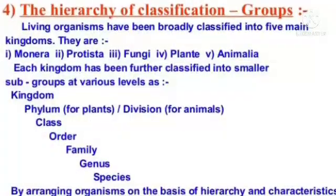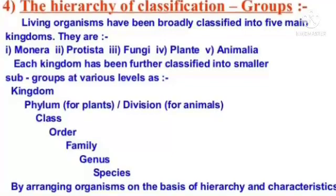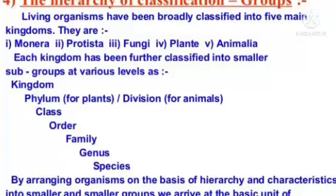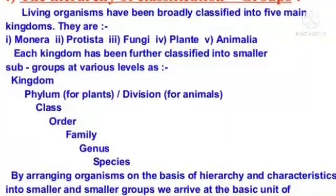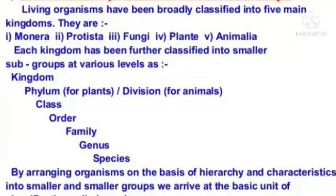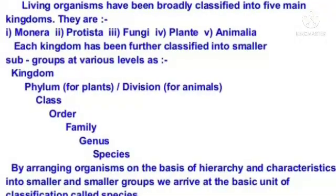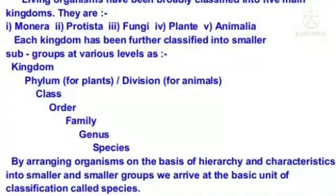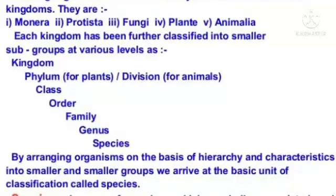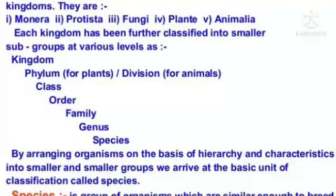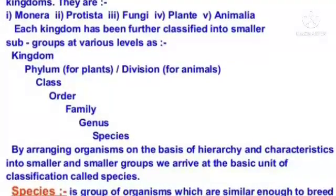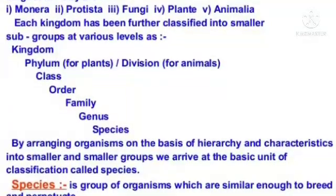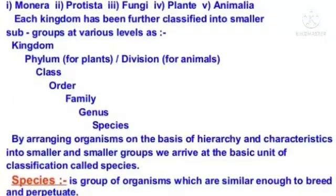The Hierarchy of Classification Groups. Living organisms have been broadly classified into five main kingdoms: Monera, Protista, Fungi, Plantae, and Animalia. Each kingdom is further classified into smaller subgroups at various levels: Kingdom, Phylum (for animals), Division (for plants), Class, Order, Family, Genus, and Species. By arranging organisms on the basis of hierarchy and characteristics into smaller and smaller groups, we arrive at the basic unit of classification called Species. Species is a group of organisms which are similar enough to breed and perpetuate.